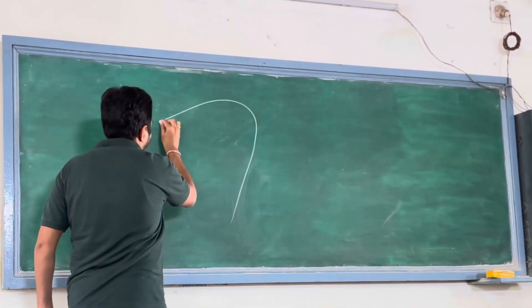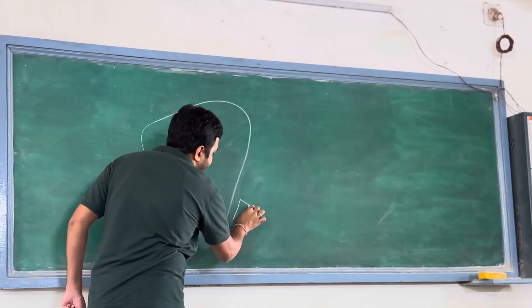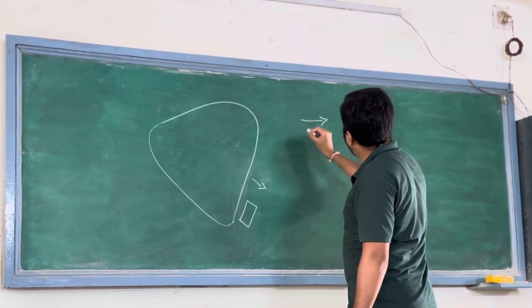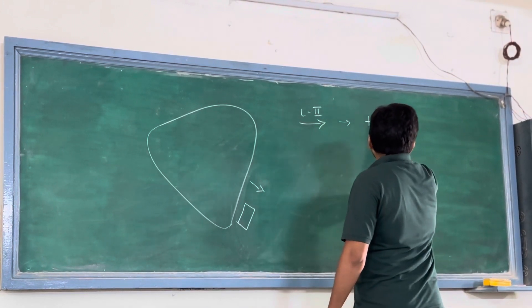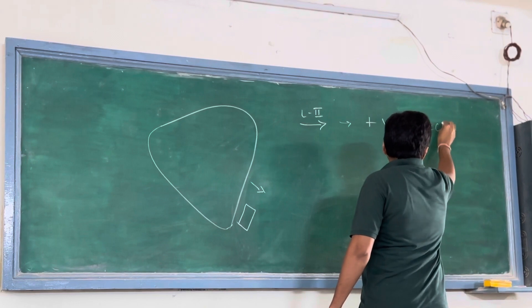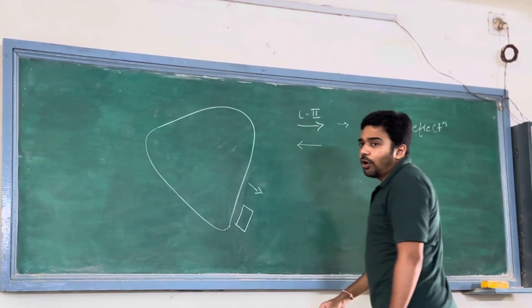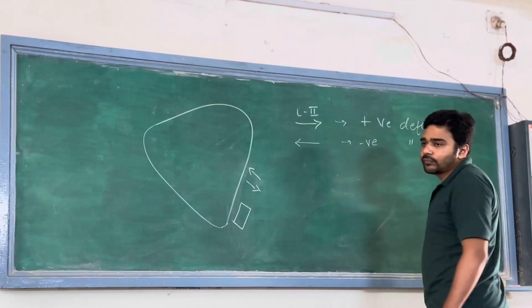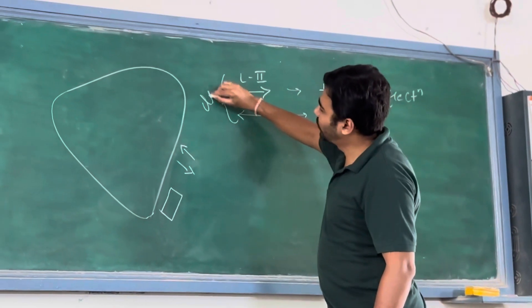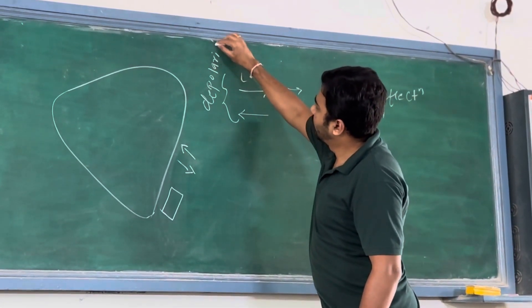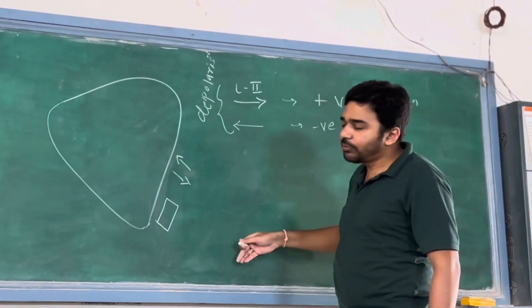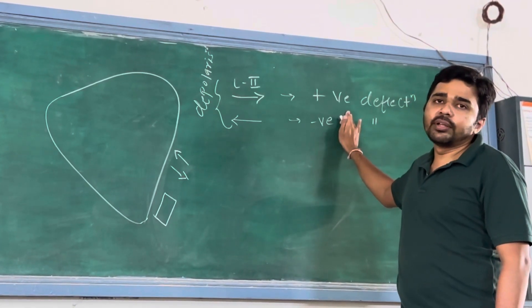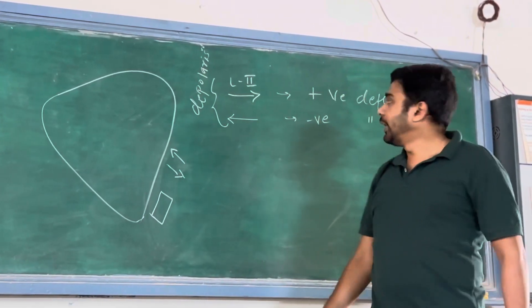This is Lead 2. Whatever current is in the direction of Lead 2, it will give a positive deflection. If it is in the opposite direction of Lead 2, it will give a negative deflection. This is about depolarization — if depolarization is in the direction of the particular lead, it will give positive deflection, and if depolarization is in the opposite direction of the lead, it will give negative deflection.